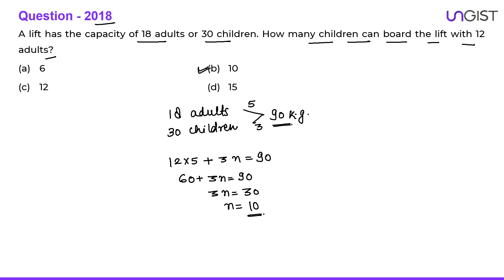Total 10 children can board the lift with 12 adults. The answer is 10 children. This is a simple question and we used the LCM approach that we use in the time and work topic — that is why I kept this question here.